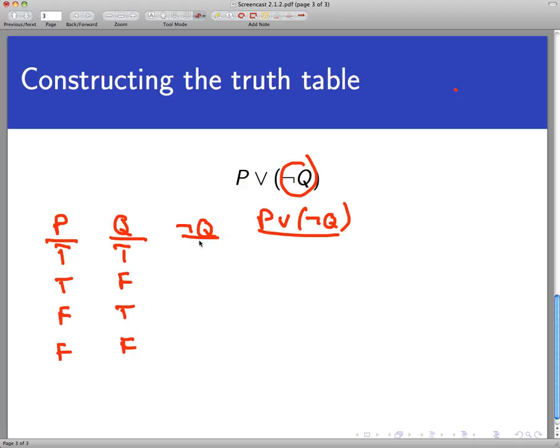So let's first fill in the column for not Q. Not Q, the negation of Q, is just the logical opposite of Q. So whenever Q is true, not Q is false. And whenever Q is false, not Q is true. So here is the column for the negation of Q.